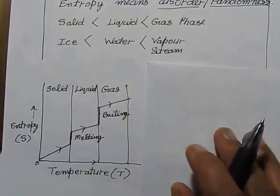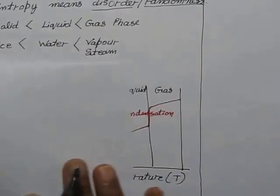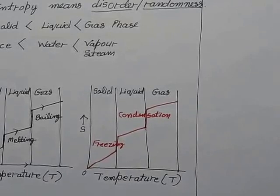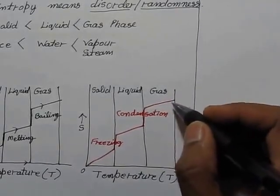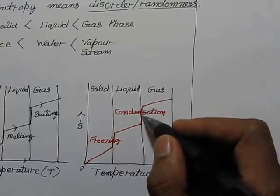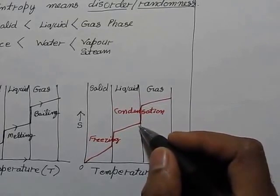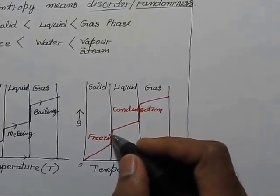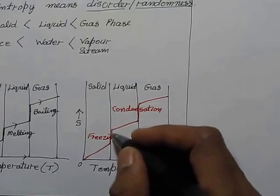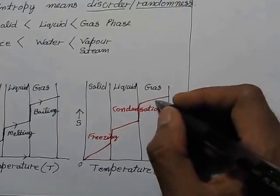On the other hand, if we go in the reverse direction, basically if we decrease the temperature of gas, it will start condensation and convert into liquid. And if you keep decreasing the temperature, at a certain temperature around 0 degrees Celsius it will start freezing.